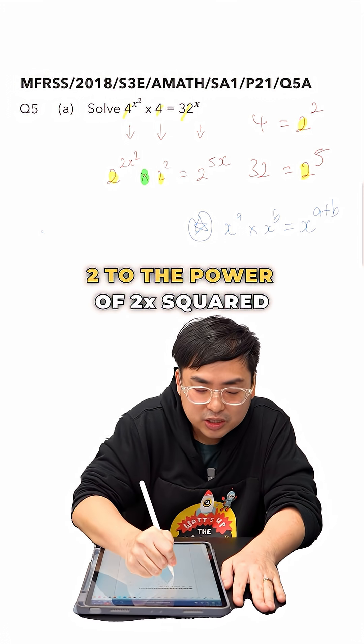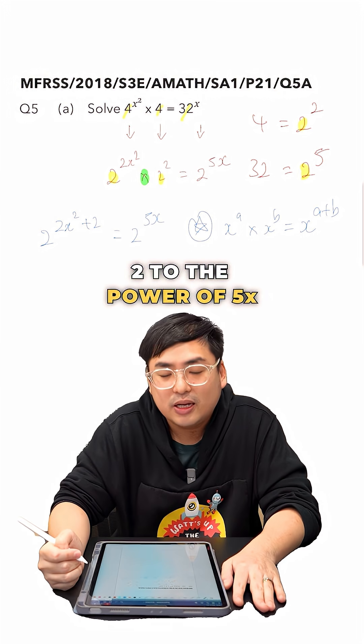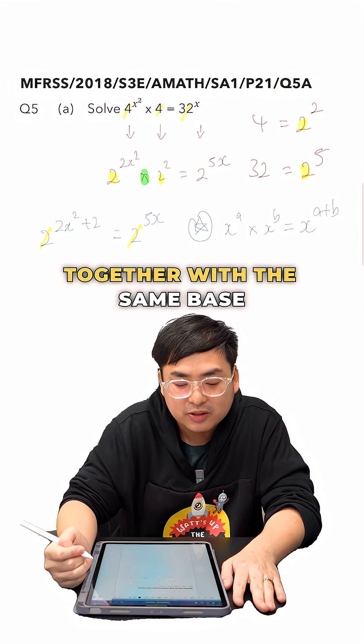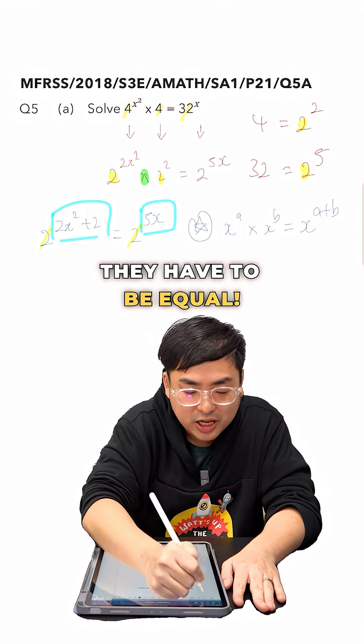From here, we will get 2 to the power of 2x squared plus 2 in the power position, equals to 2 to the power of 5x. And right now, our equation consists of one term on each side together in the same base. So what can we say about the powers? They have to be equal.